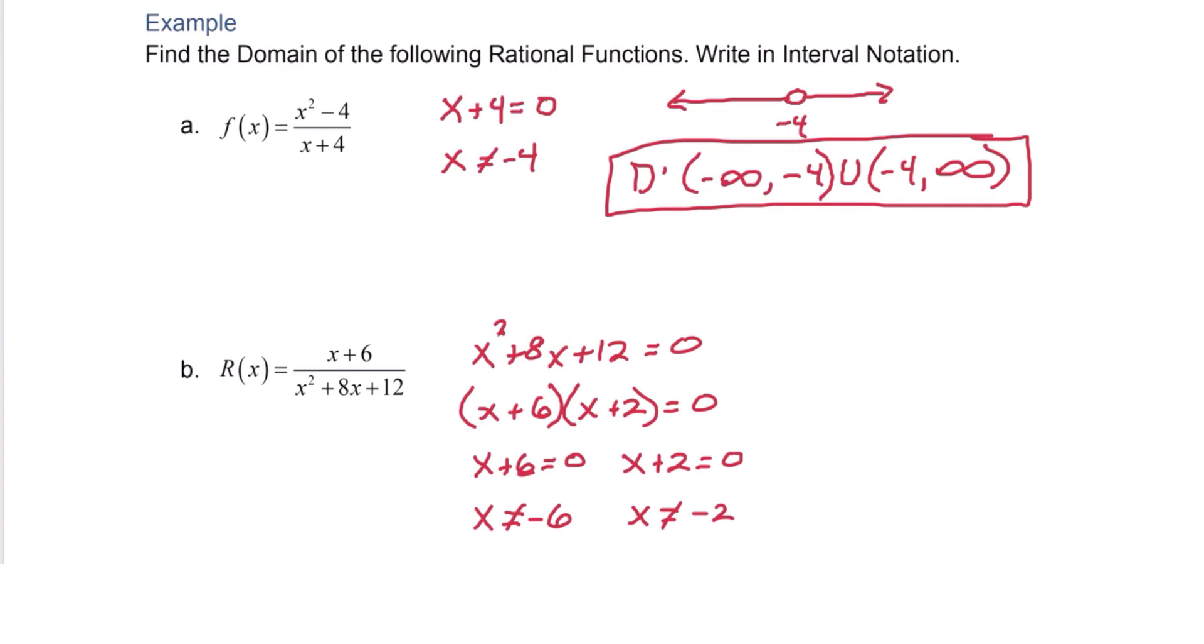If you need help with the interval notation, you can always sketch a graph. We have a number line, but we are excluding the values negative 6 and negative 2. And then the interval notation will have the three separate intervals. Negative infinity to negative 6, union negative 6 to negative 2, and finally, we'll join that with negative 2 to positive infinity.